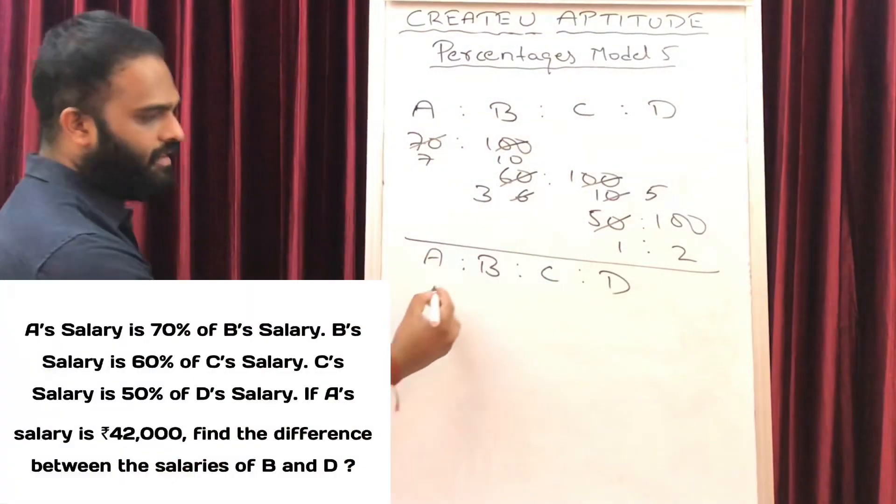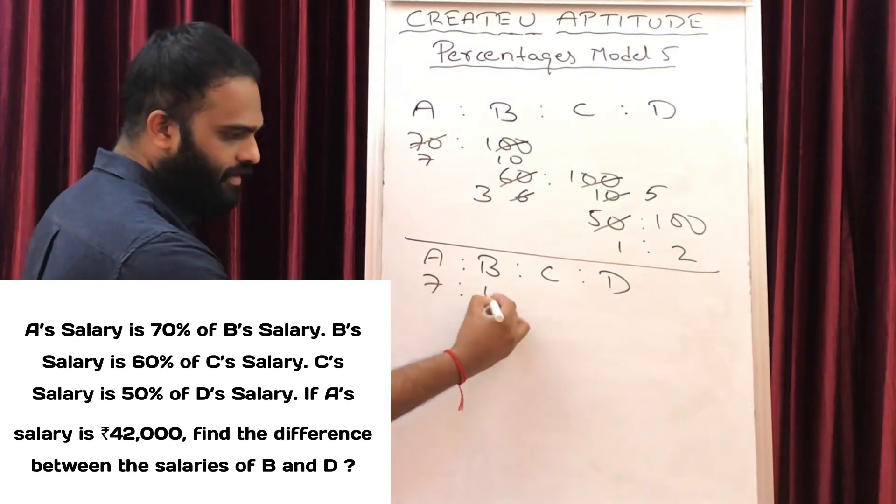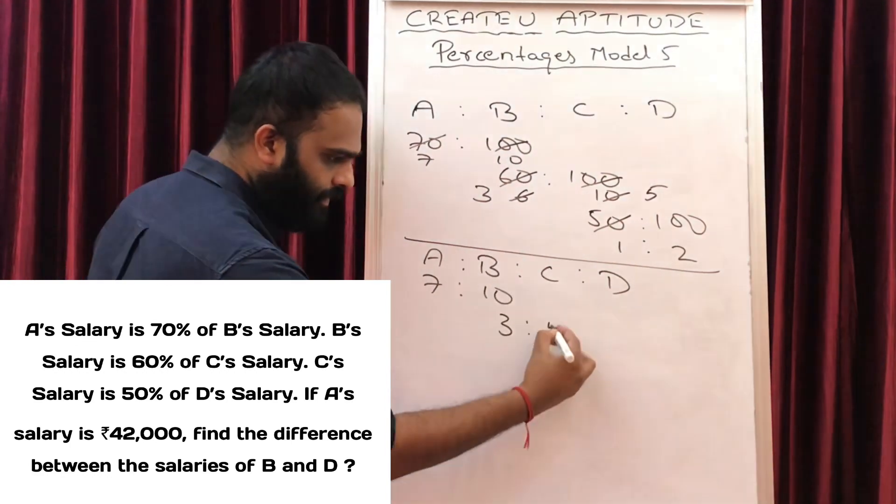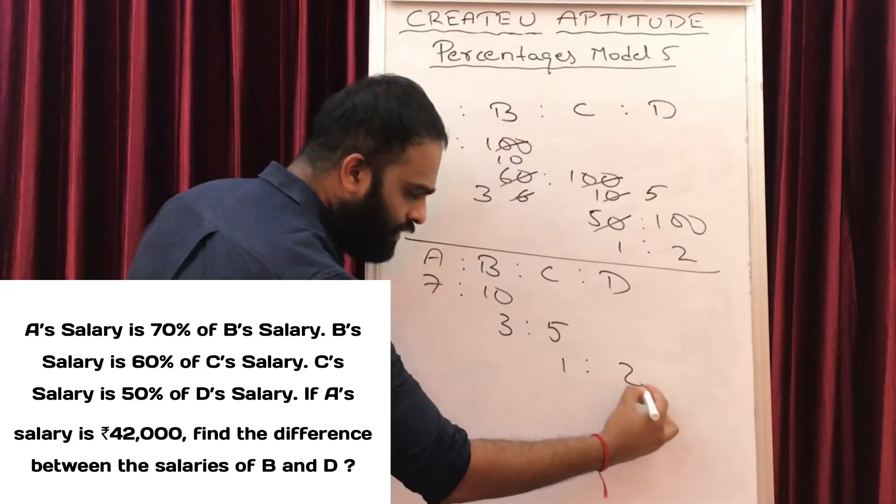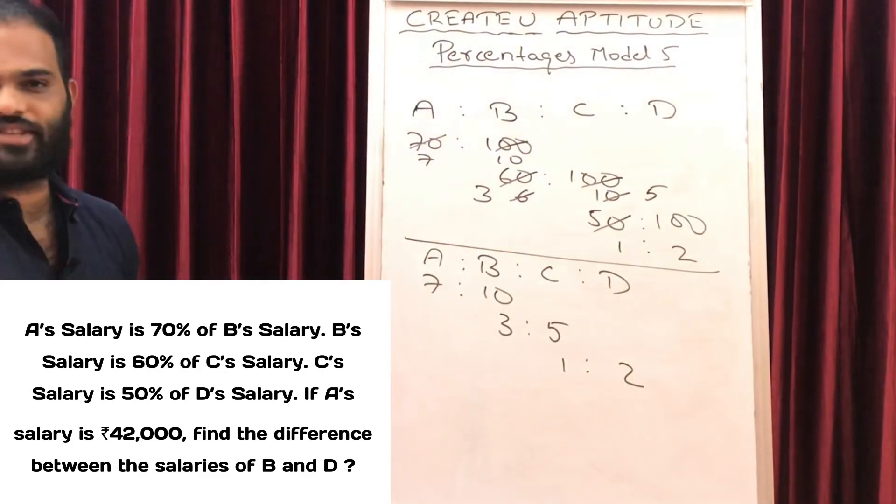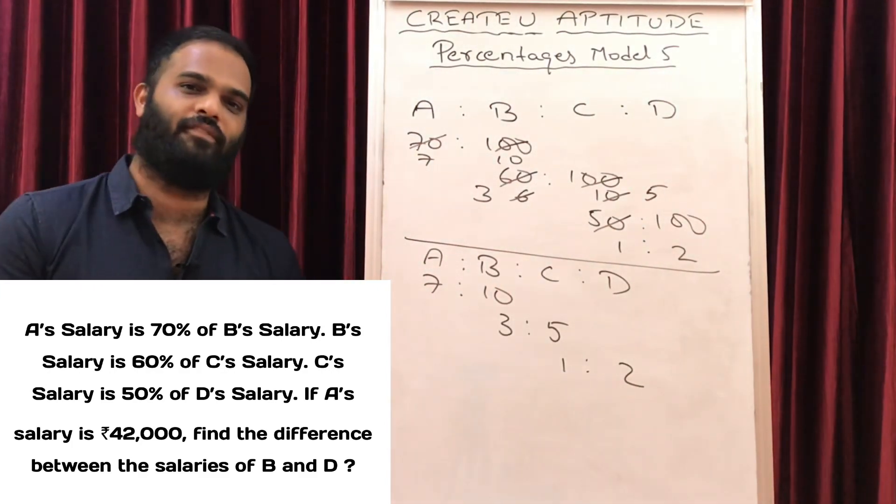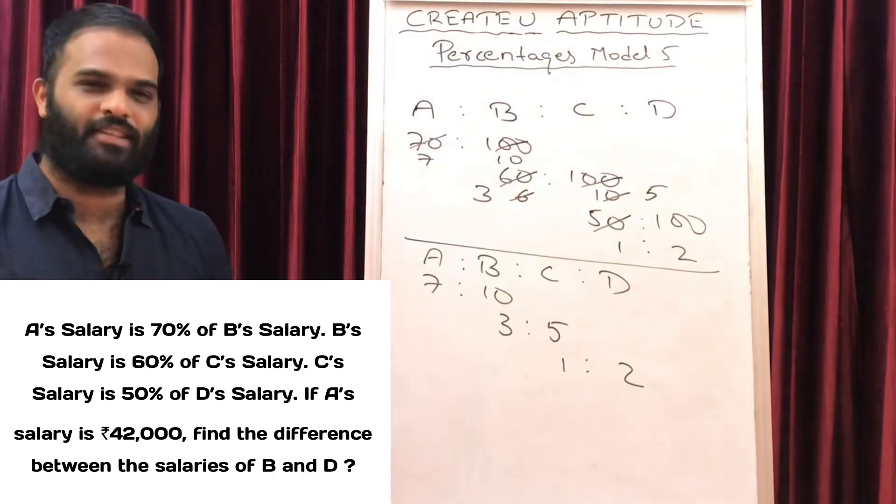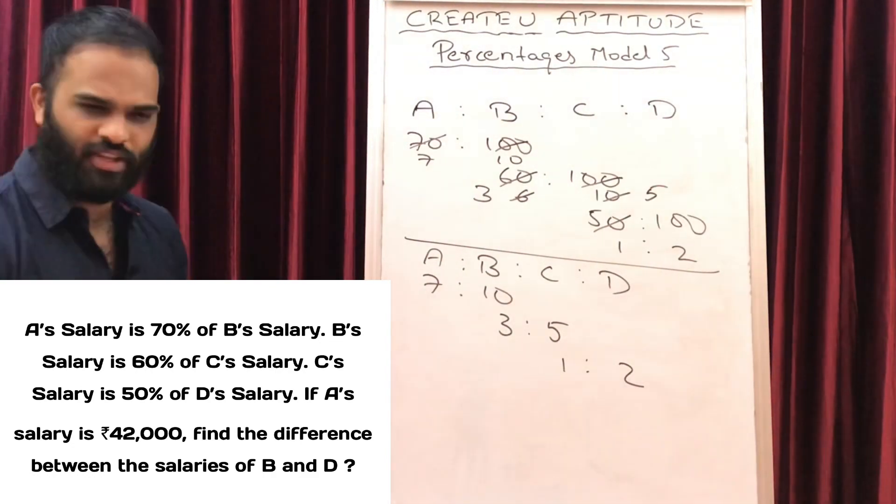You will get it as 7 is to 10, 3 is to 5, 1 is to 2. This is how we need to write A is to B is to C is to D. I have initially said one method that you can write, a mind-blowing method. It is very simple.